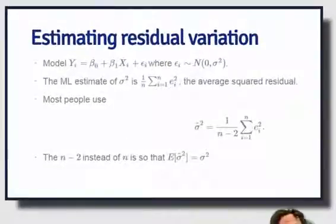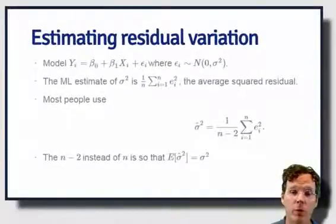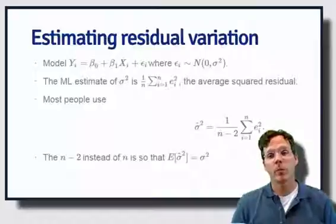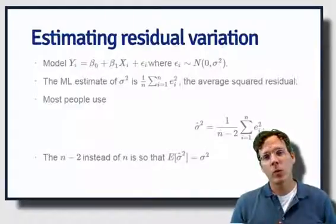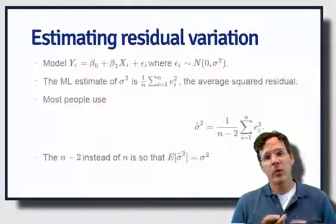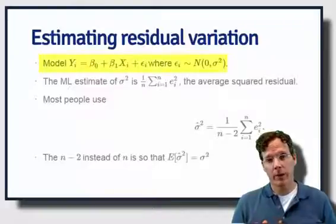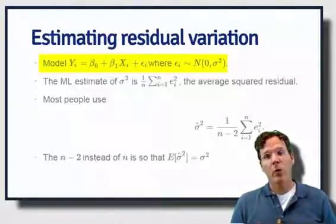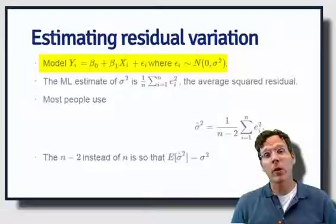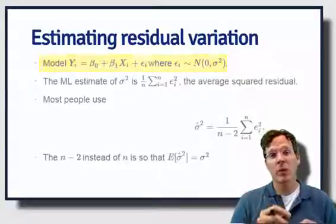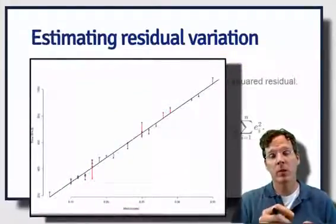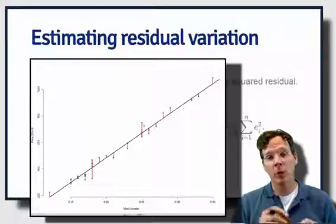Let's talk about residual variation really quickly before we finish talking about R squared. Residual variation is the variation around the regression line. Our residuals are the vertical distances between the outcomes and the fitted regression line.